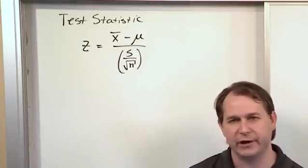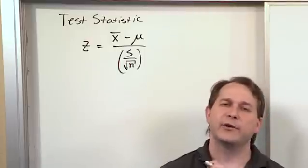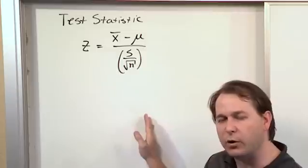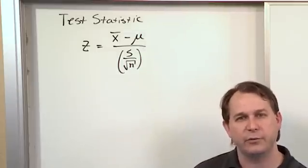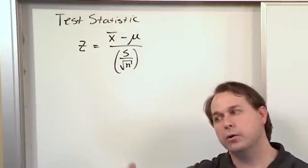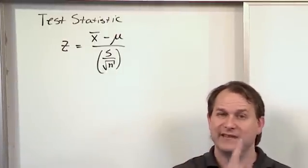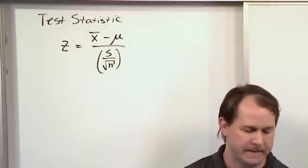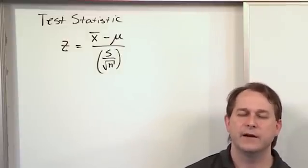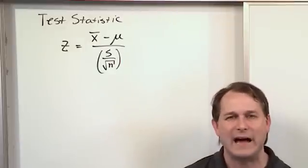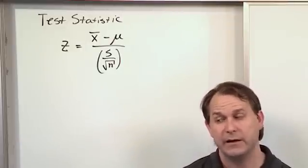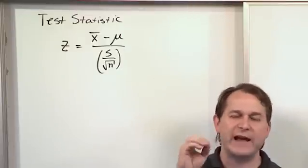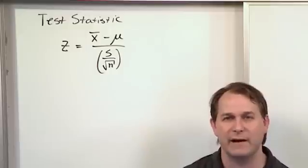That's what we've done in the past. For every one of those problems, we had to go into the t distribution and figure out those values of t that define our rejection regions — t sub alpha, negative t sub alpha, or for a two-tail distribution, t alpha over 2. We've done that many, many times. The reason we had to find those values for every single problem is because the t distribution totally changes shape depending on the degrees of freedom.